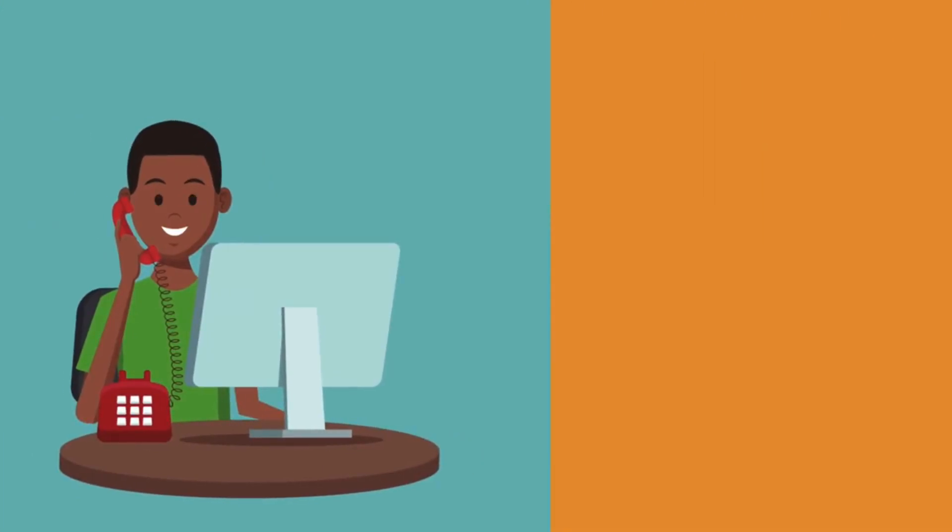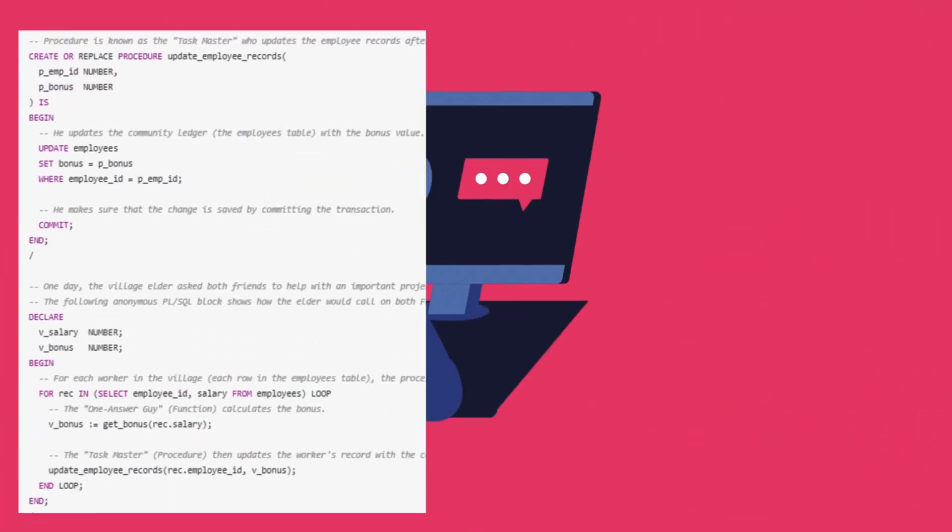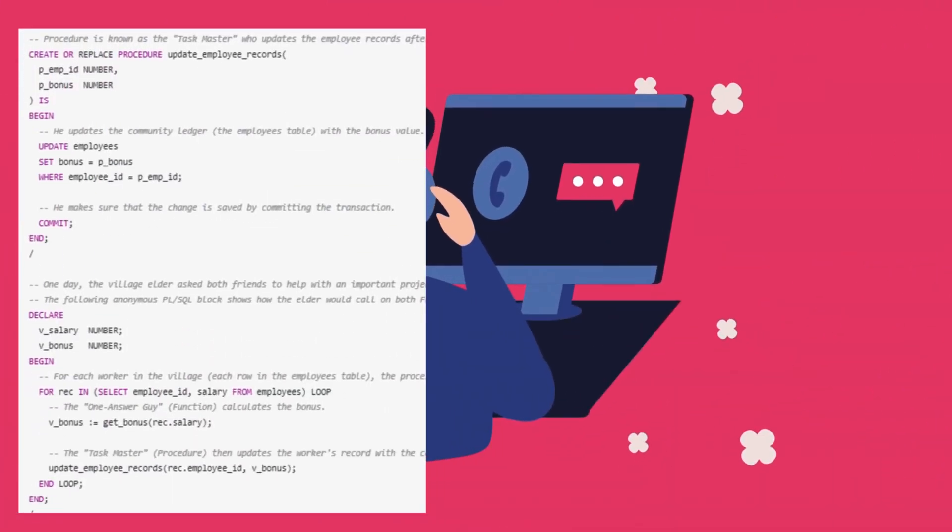One day, the village elder asked both to help with an important project. Function was asked to calculate the bonus for every worker, a simple task that required only one answer per worker, a task he performed flawlessly, always ending his work with a clear return of his result.